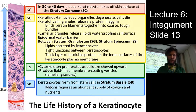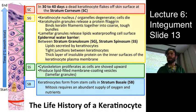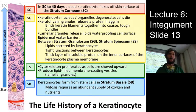By the time cells reach the stratum corneum, they are totally desiccated, compacted, and fairly ruptured, and begin to flake off as dead skin flakes.